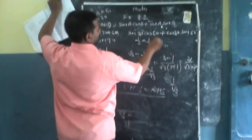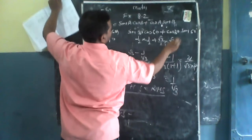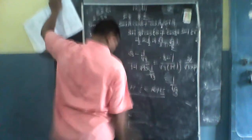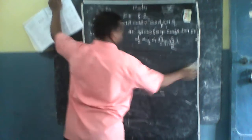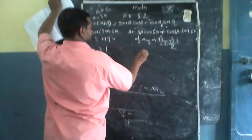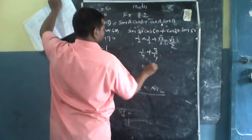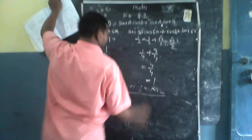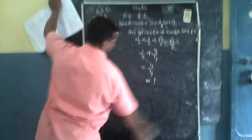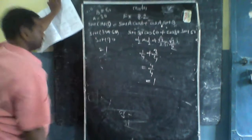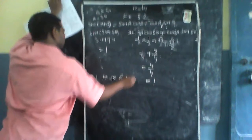Values रखिएंगे: 1/2 × 1/2 + √3/2 × √3/2। Solve करेंगे: 1/4 + 3/4 = 4/4 = 1। LHS = RHS, proof हो गया।